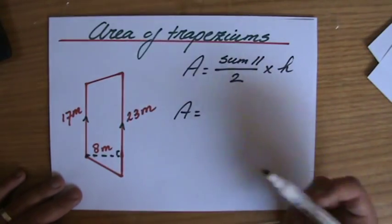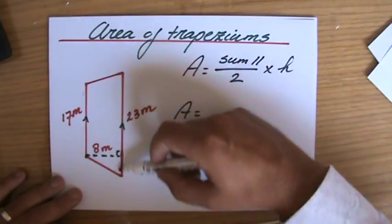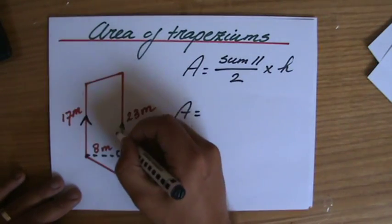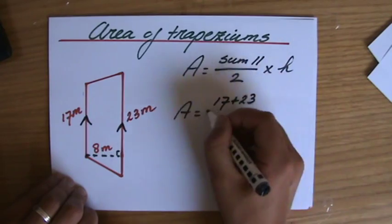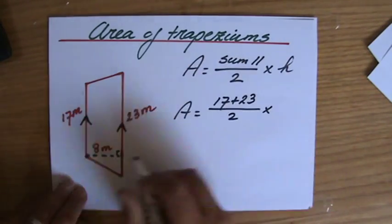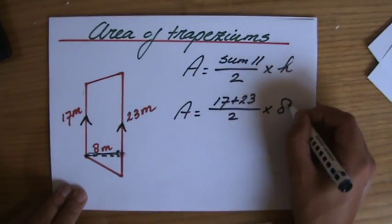The sum of parallel lines - what are the parallel lines? Well, these are parallel, you see the arrow. So the sum, 17 plus 23, and we write it down, divided by 2, times the perpendicular height, that is 8.